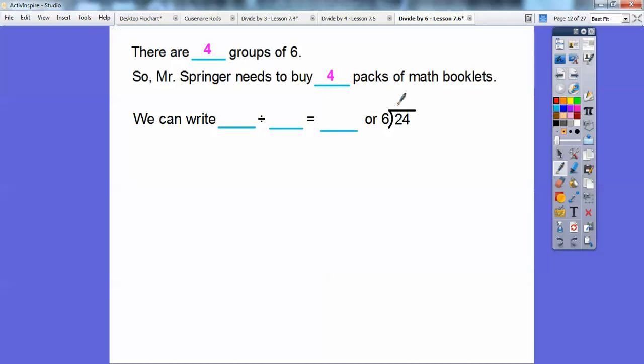We'll write the 4 right on top of the 24. Don't write it on top of the 2 or in the middle. You write it on top of the 4 because 6 doesn't go into 2, it goes into 24. So you always write it over that last digit.